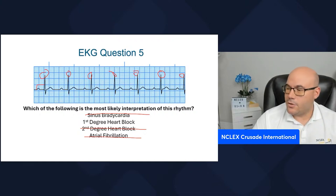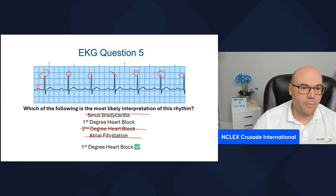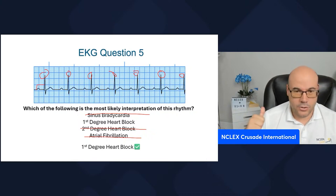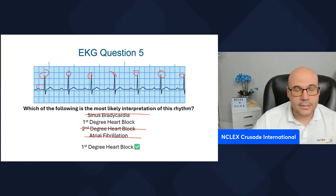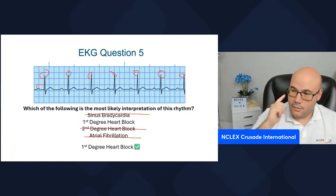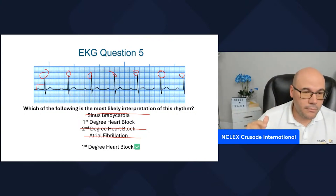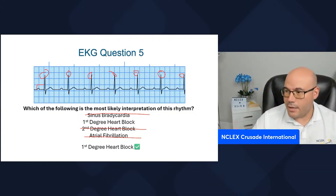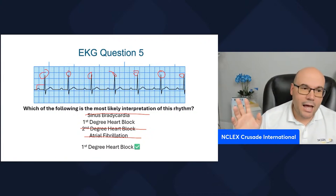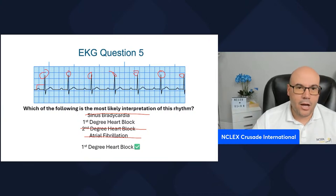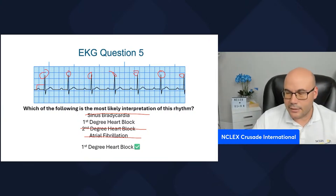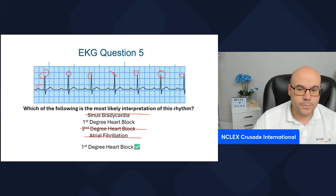The correct answer is a first degree heart block. Why? It is regular. There's a P and a QRS. The heart rate is close to 70. And the only thing that I have is prolongation of the PR interval, which is constant. That is observed in a first degree heart block.